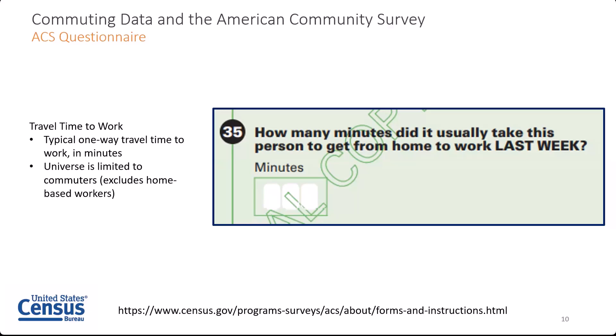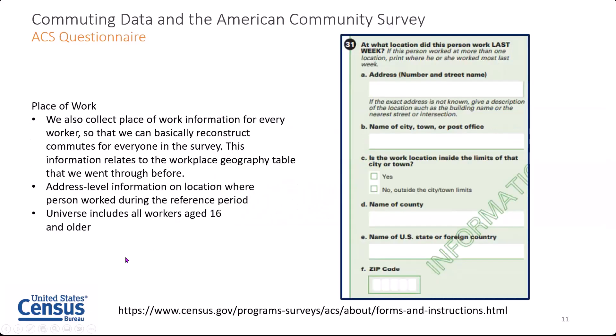The last piece of information that we collect about commuting is the place of work. We collect place of work information for every worker, including those who work from home, so that we can basically reconstruct commutes for everyone in the survey. We ask people for address-level information on the location where the person worked during the reference period. This information allows us to have an origin and destination relationship for every working respondent in the survey. These relationships we refer to as commuting flows.